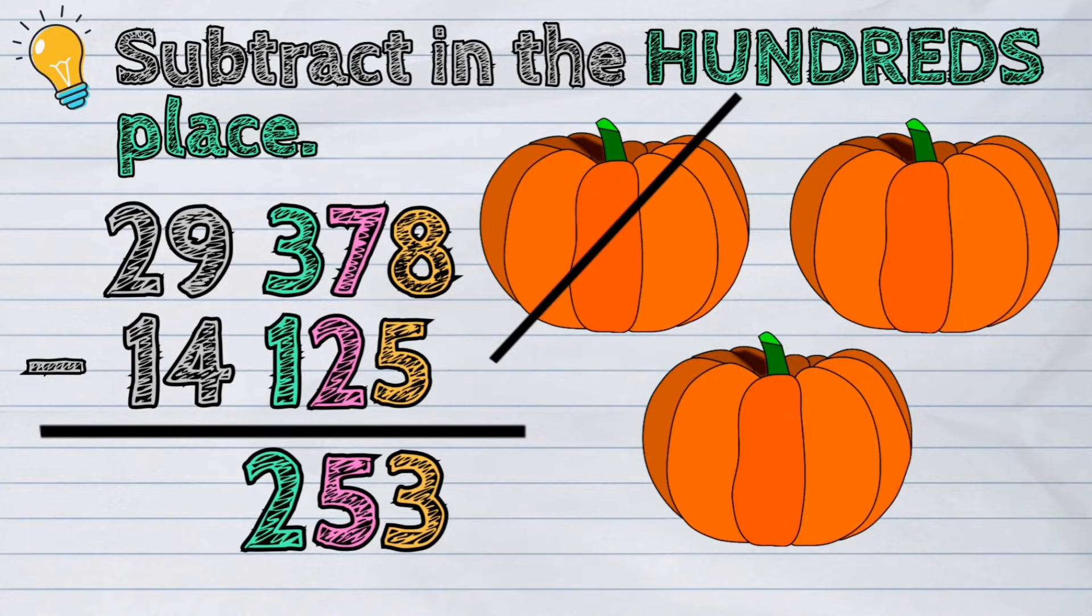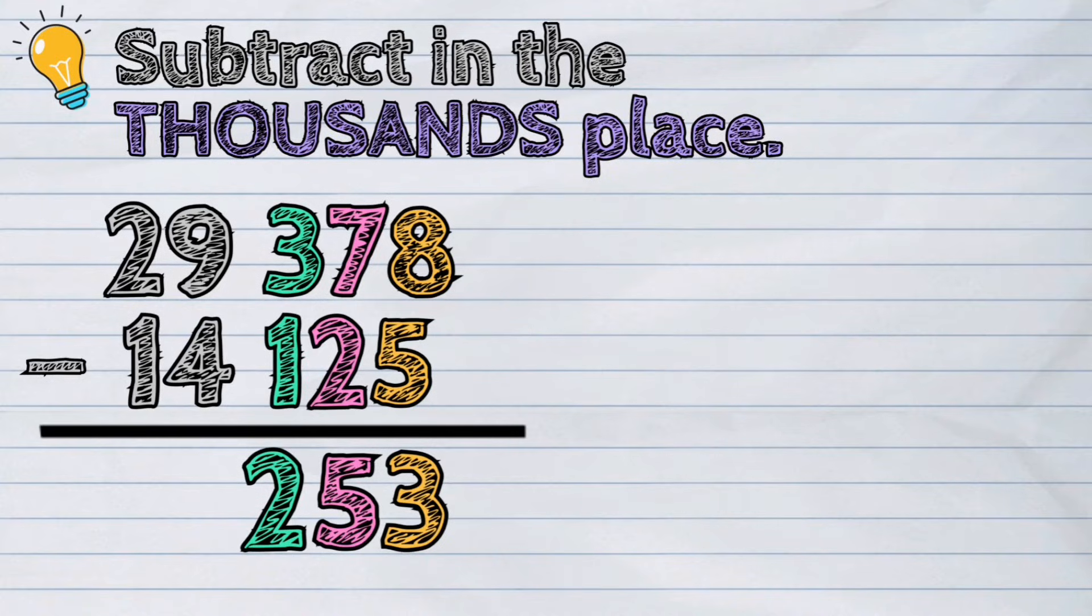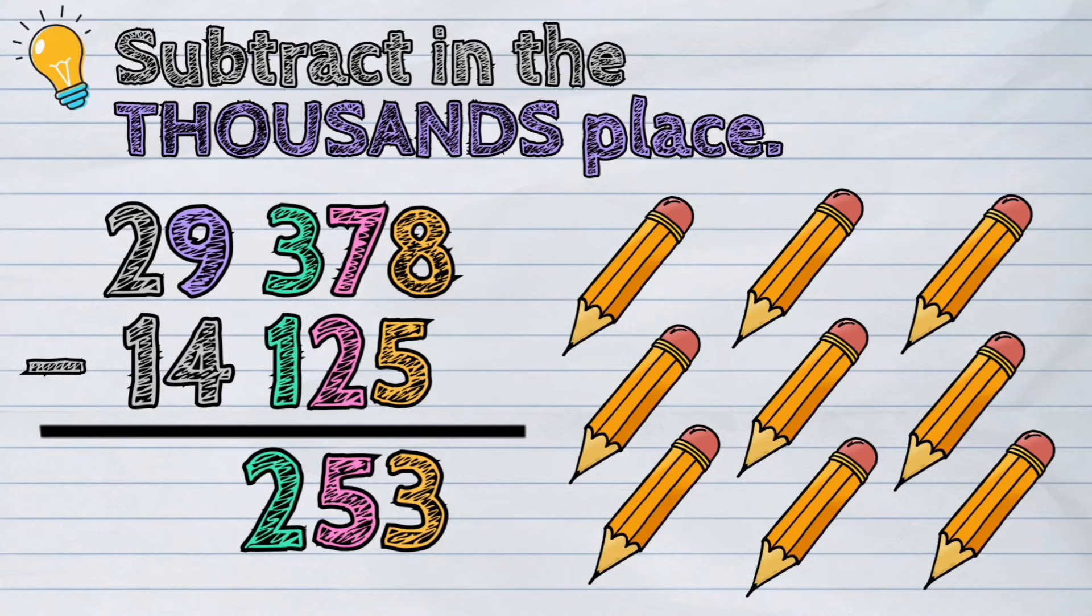Next, we will subtract the numbers in the thousands place. 9 minus 4 is equal to 5.